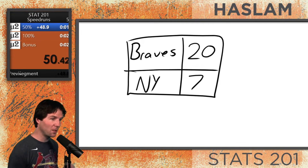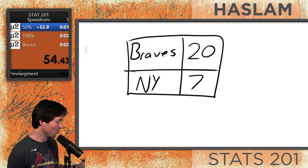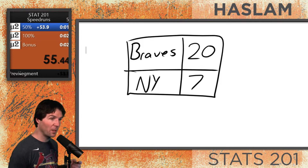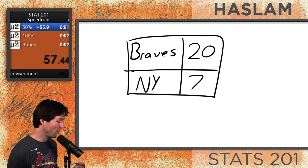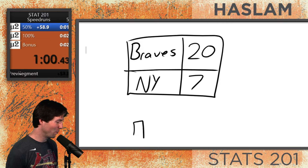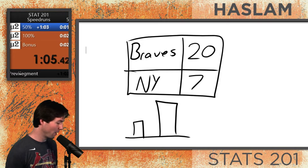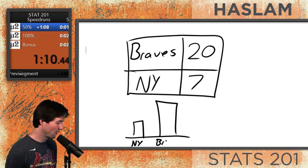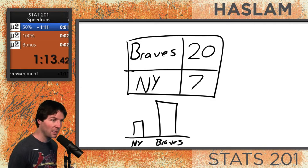This is a relative frequency table — excuse me, it's a frequency table. We could do the relative part by turning it to a percentage, but we could also ask the question by doing a bar chart. A bar chart for it would look something like this, where we'd have down here at the bottom New York and here Braves. A bar chart is the same way of displaying that data.